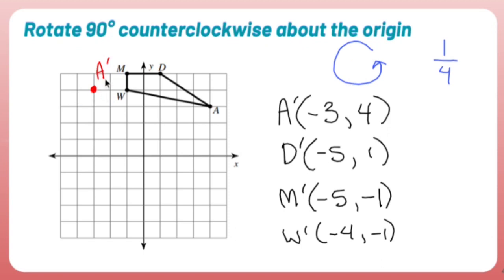So I'm starting to build my new image. That's my pre-image. Here's my new image. D prime is left 5, up 1. So I'm going to go left 1, 2, 3, 4, 5, up 1. That was D prime.